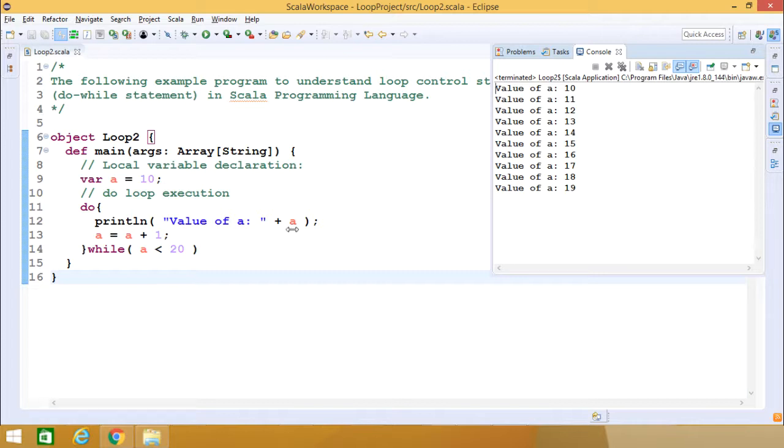Because after printing 19 the value of a is becoming 20, and 20 is less than 20 - this condition is becoming false, so it is coming out from the loop construct.